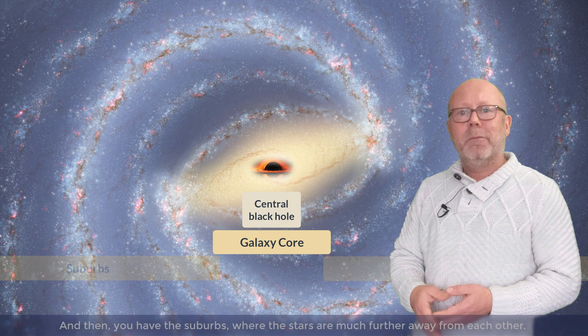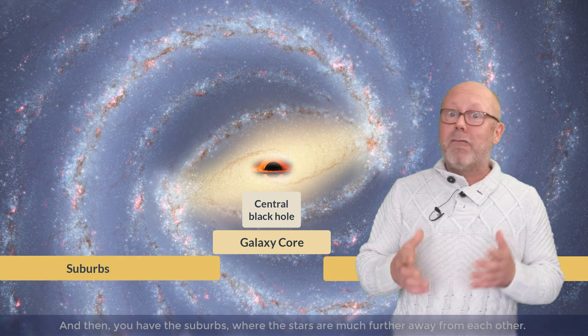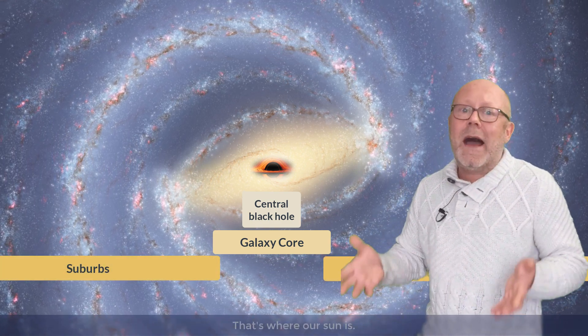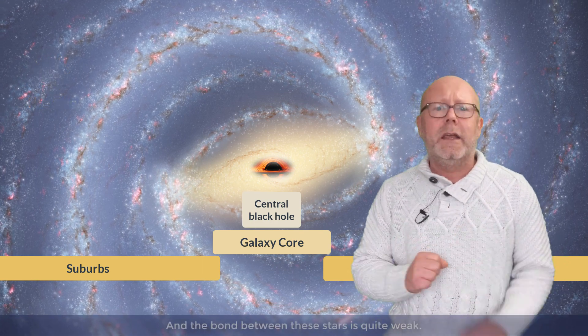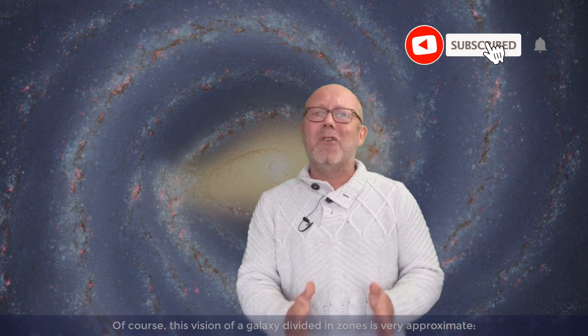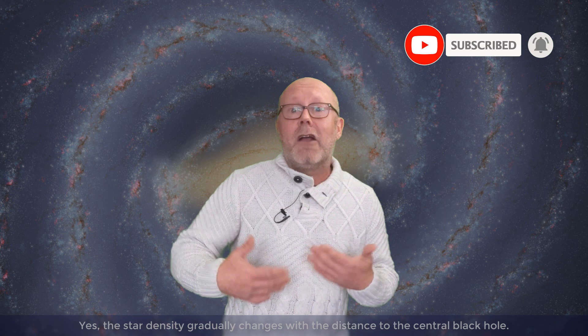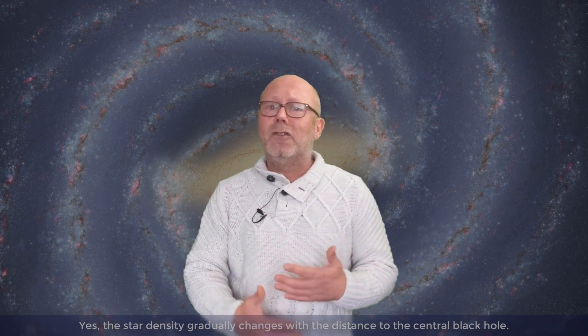And then you have the suburbs, where the stars are much further away from each other. Hey, that's where our sun is. And the bond between these stars is quite weak. Of course, this vision of a galaxy divided in zones is very approximate. Yes, the star density gradually changes with the distance to the central black hole. But here, we are just trying to get a model that is close enough for its predictions to be meaningful.